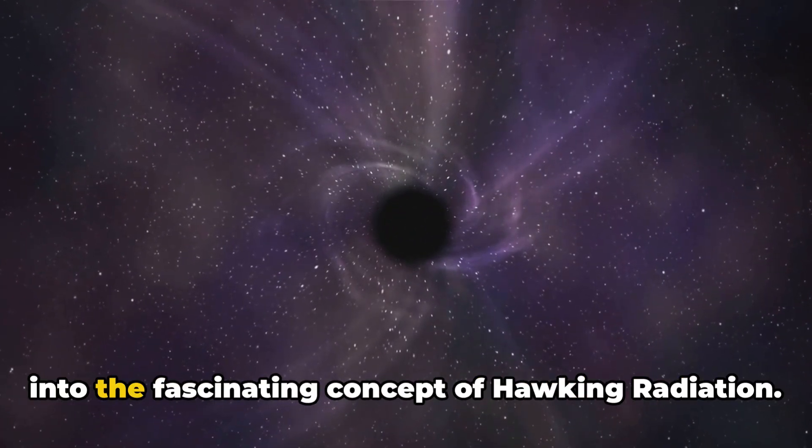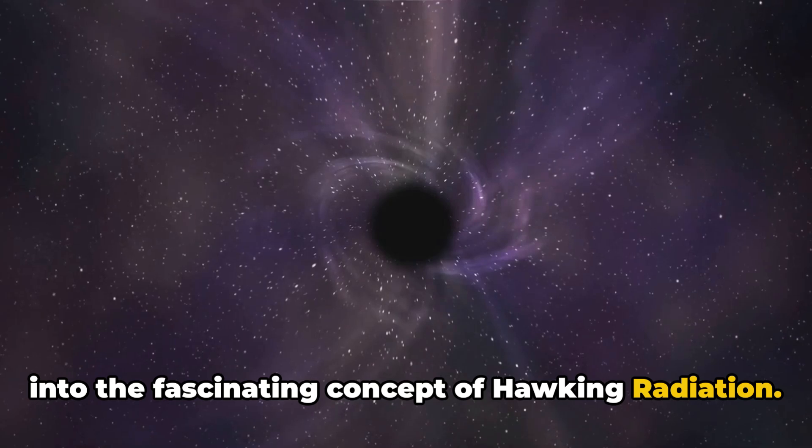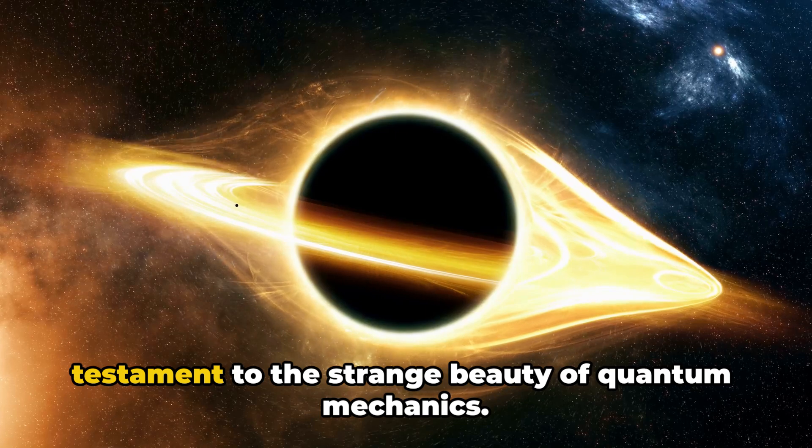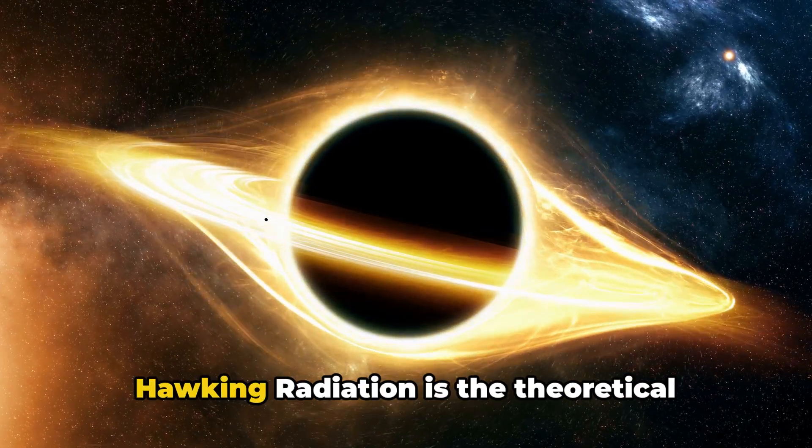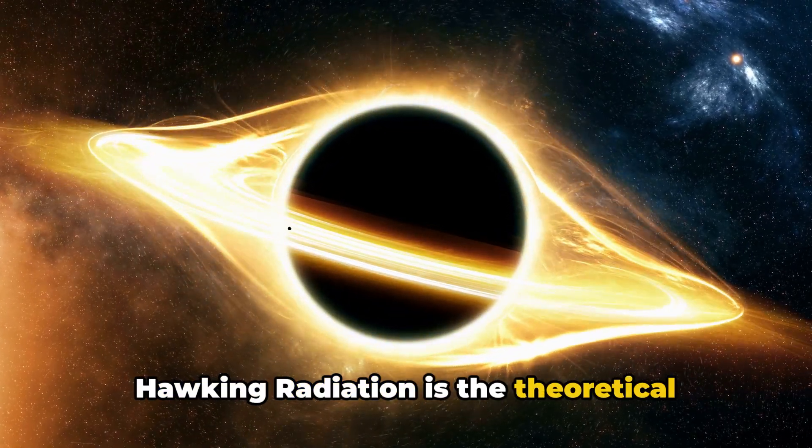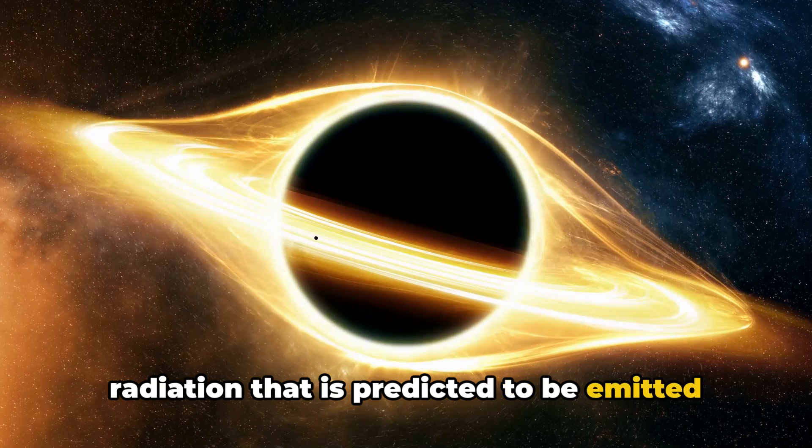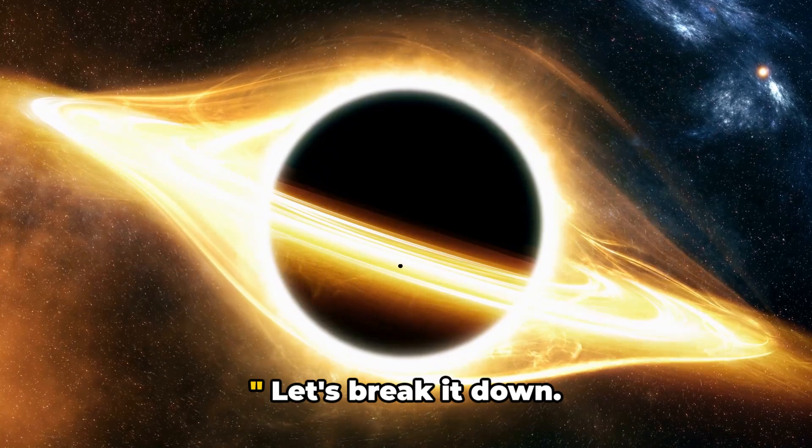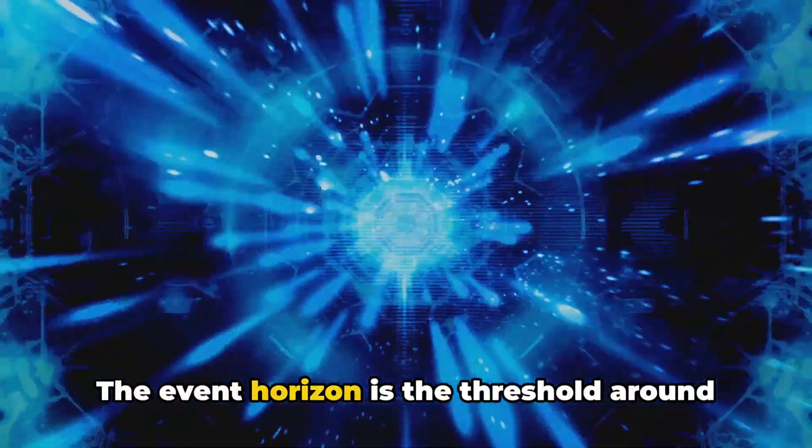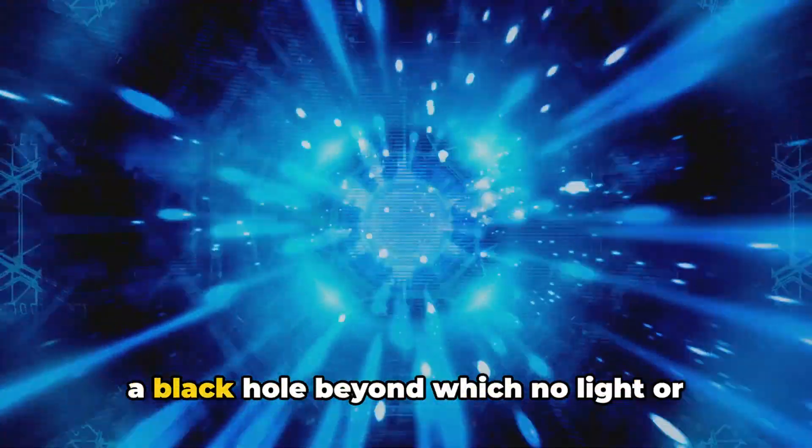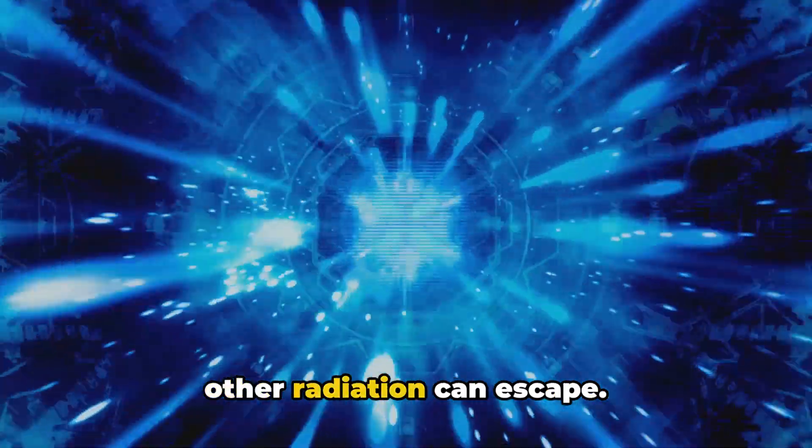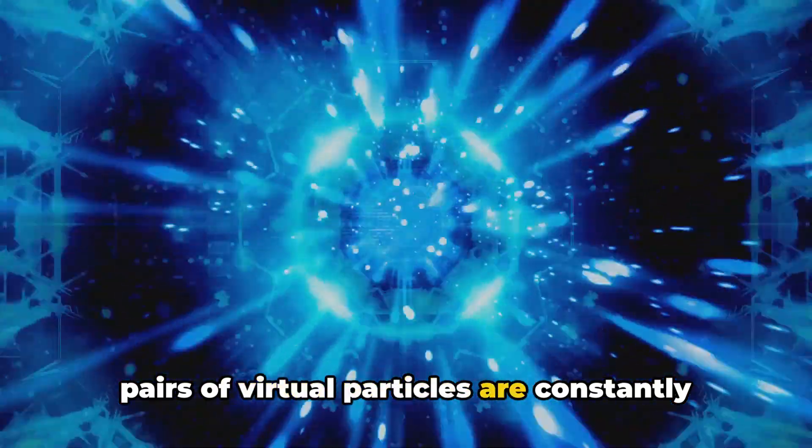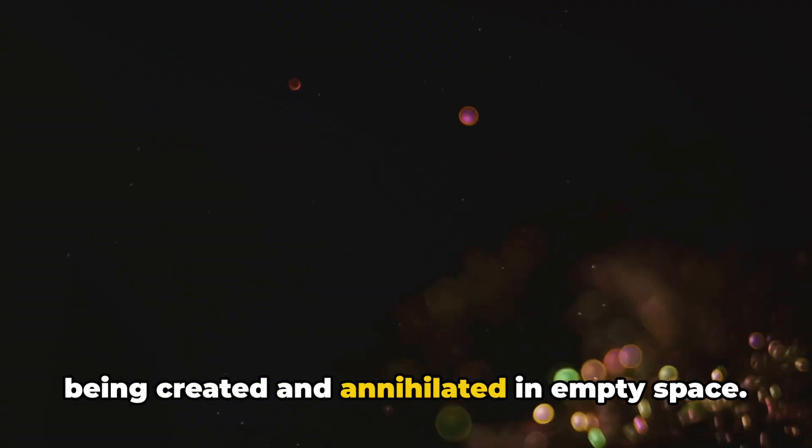Halfway through at number six, we delve into the fascinating concept of Hawking radiation. Named after the brilliant physicist Stephen Hawking, this theory is a testament to the strange beauty of quantum mechanics. Hawking radiation is the theoretical radiation that is predicted to be emitted by black holes due to quantum effects near the black hole's event horizon. Let's break it down. The event horizon is the threshold around a black hole beyond which no light or other radiation can escape. Yet in the world of quantum mechanics, pairs of virtual particles are constantly being created and annihilated in empty space.